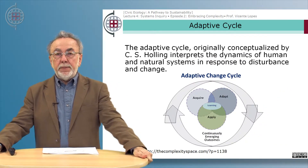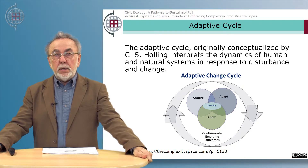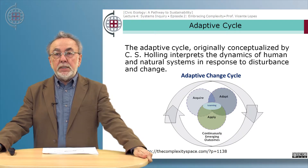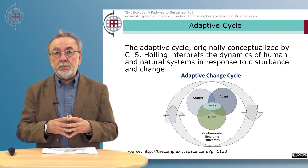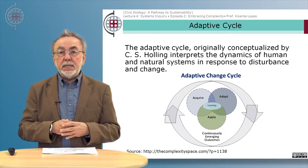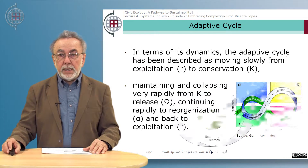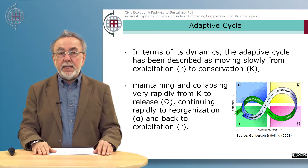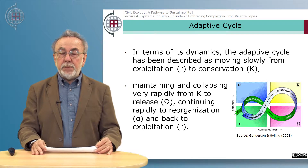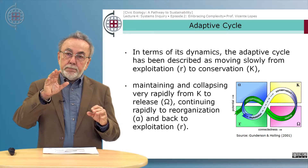We now move to the last part of this episode to discuss a model of complex adaptive change called the adaptive cycle. This model was originally conceptualized and proposed by American ecologist Crawford Stanley Holling. It is very useful to help us interpret the dynamics of coupled human and natural systems — social ecological systems — in response to disturbances and change. The model has an H-shaped horizontal figure-eight and attempts to explain the dynamics of complex adaptive systems.